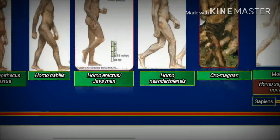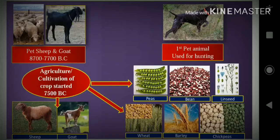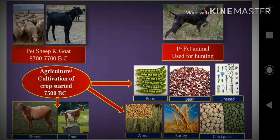Human being, man evolved 15 lakh years ago. And this type of modern man has evolved in Africa about 35,000 years ago. From 8700 to 7700 BC, sheep and goat were used as pet animals. After that, dog was also used as a pet animal. Among those pet animals, dog was used for hunting first.